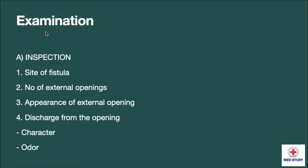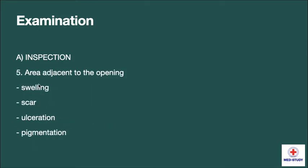Now coming to the examination part. The first is inspection — we have to inspect the site of the fistula, number of external openings, appearance of external opening, any discharge from the external opening, and the character and odor of discharge. Then we have to inspect the area adjacent to the opening for swelling, scar, ulceration, and pigmentation.